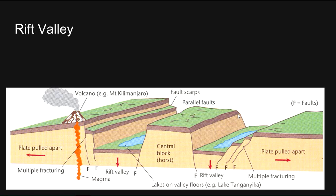Rift valleys: an example is the Great East African Rift Valley. Where spreading occurs beneath a major landmass, the heating and upward doming of the crust leads to fracturing and rifting. The crust then begins to pull apart, and as the sides of the rift move apart, central sections drop down to form rift valleys. An example is Mount Kilimanjaro, as shown in the diagram.